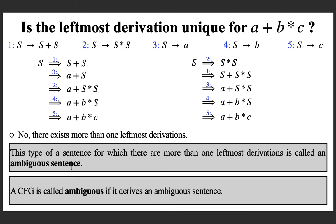A context-free grammar is said to be ambiguous if it derives an ambiguous sentence. So when is a context-free grammar called an ambiguous grammar? When that grammar gives two or more leftmost derivations for at least one string, it is called ambiguous. That is, if there exists an ambiguous sentence derived from the grammar, the grammar is said to be ambiguous. And when is a sentence said to be ambiguous? When there exists more than one leftmost derivation for the sentence. I hope the definition of ambiguity is now clear.